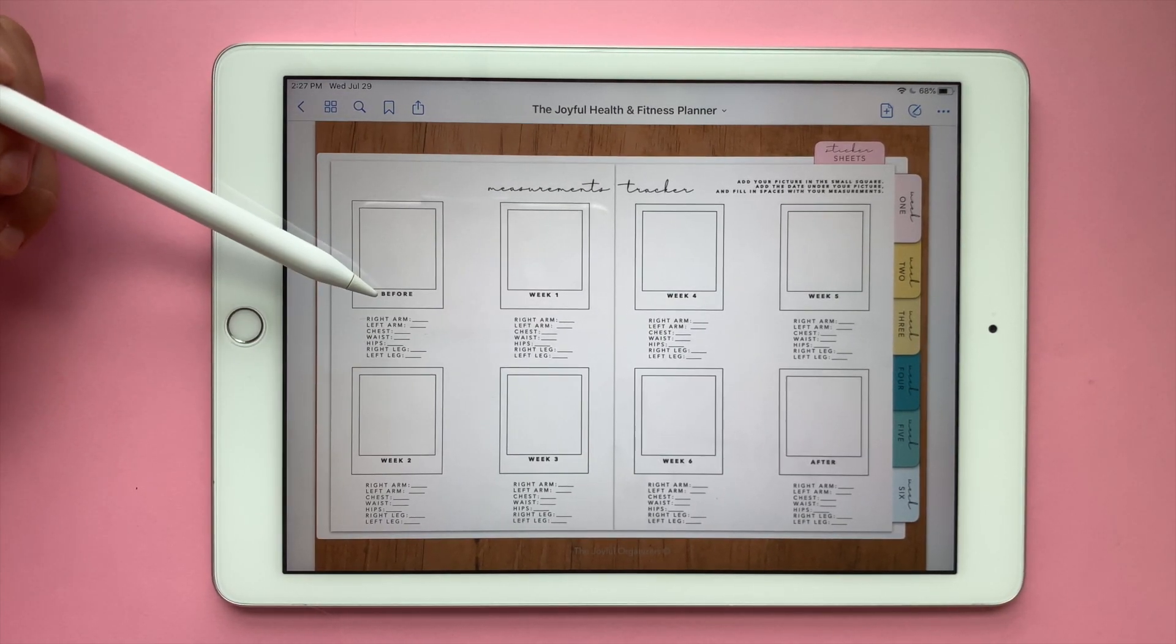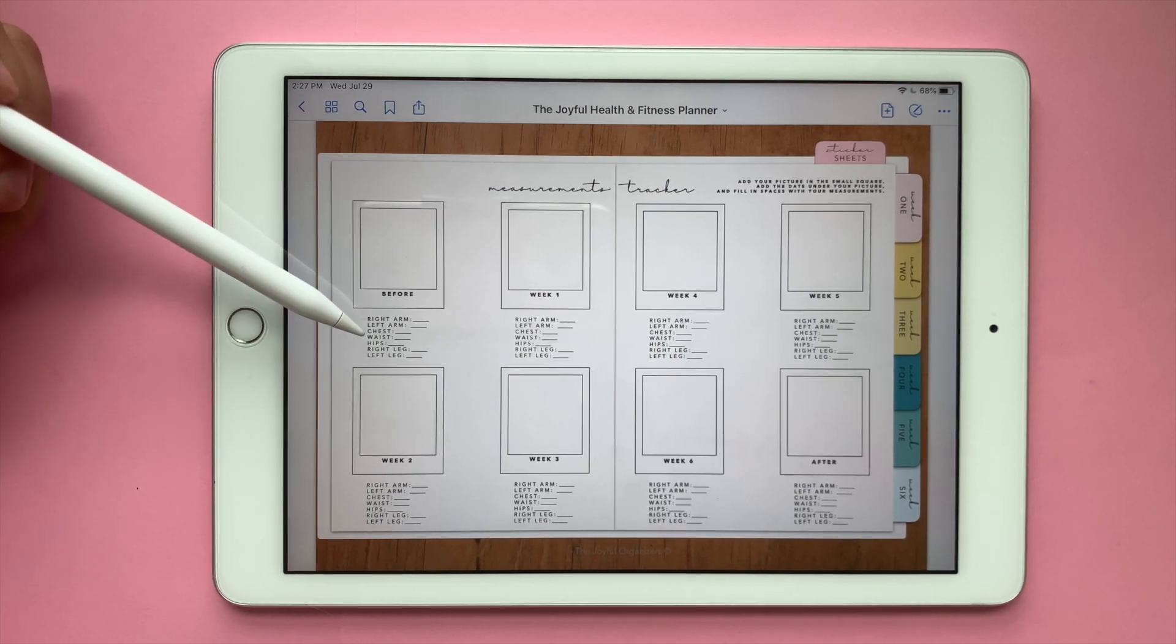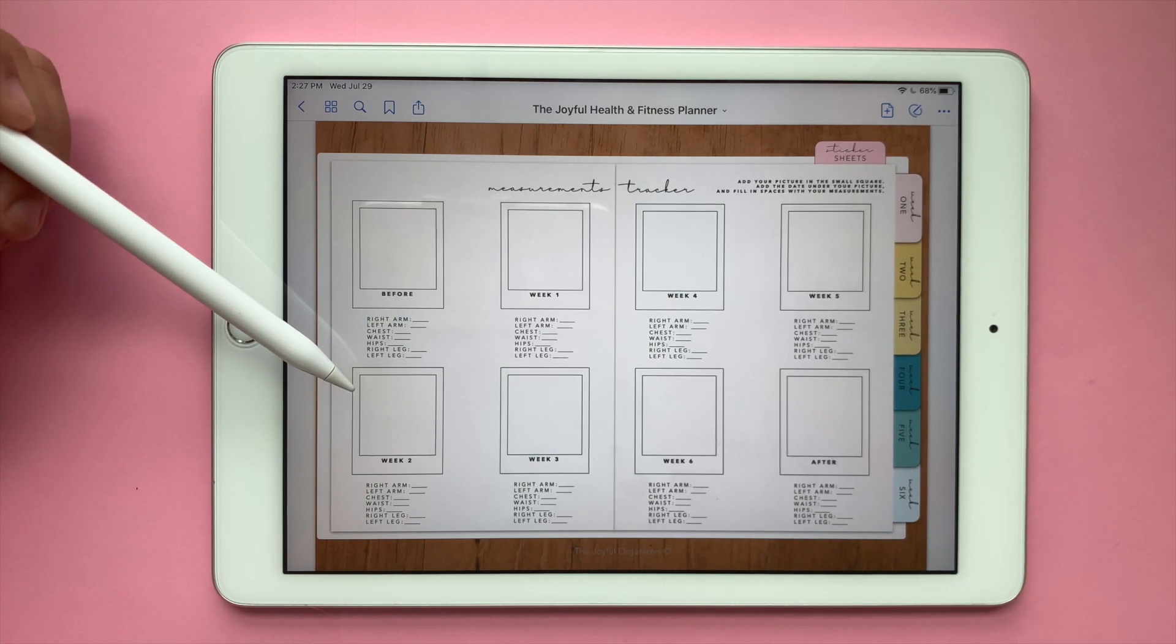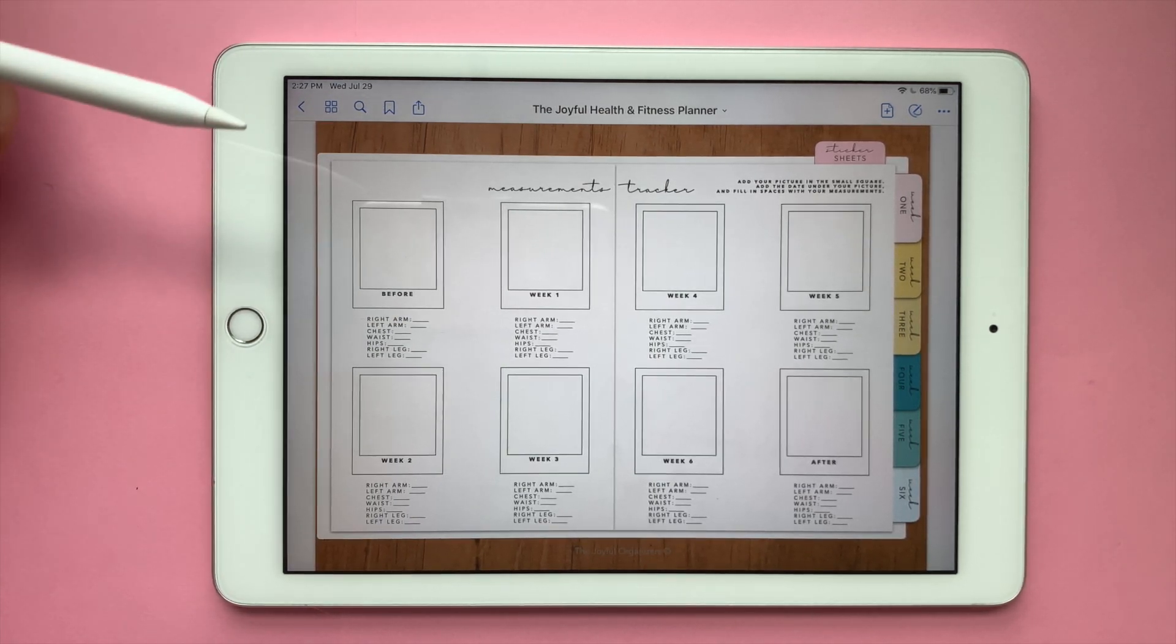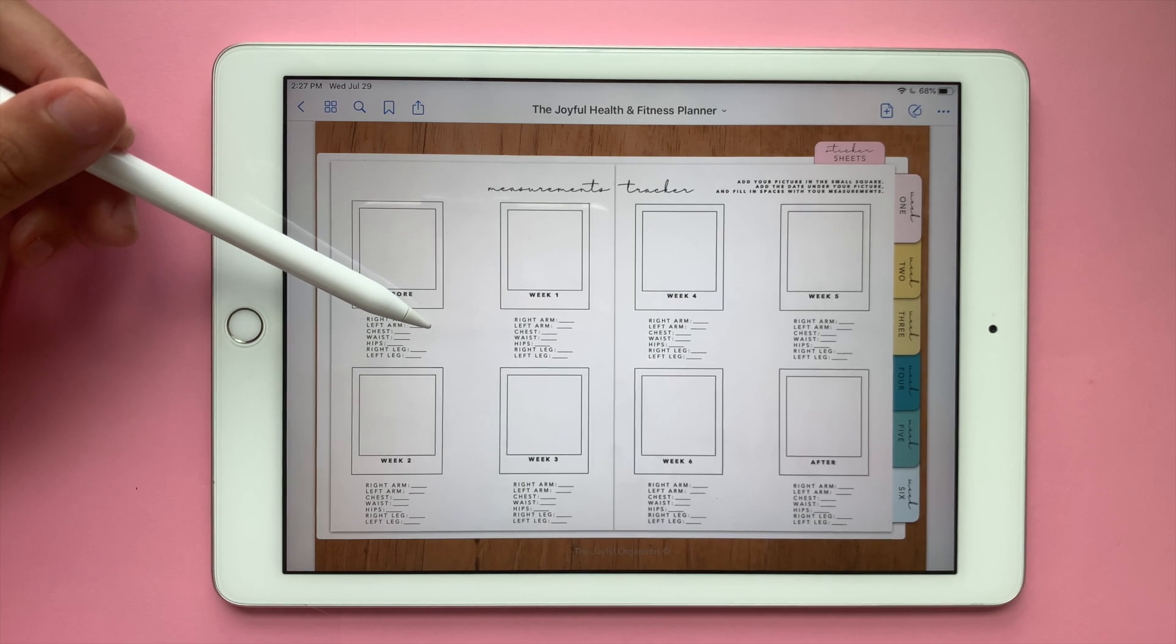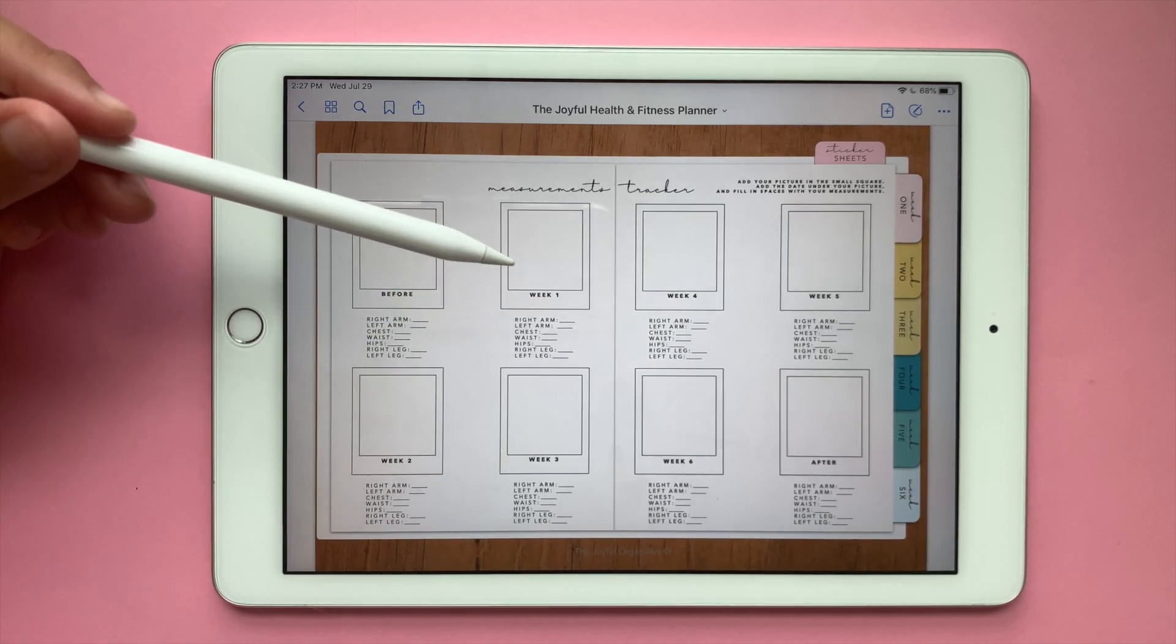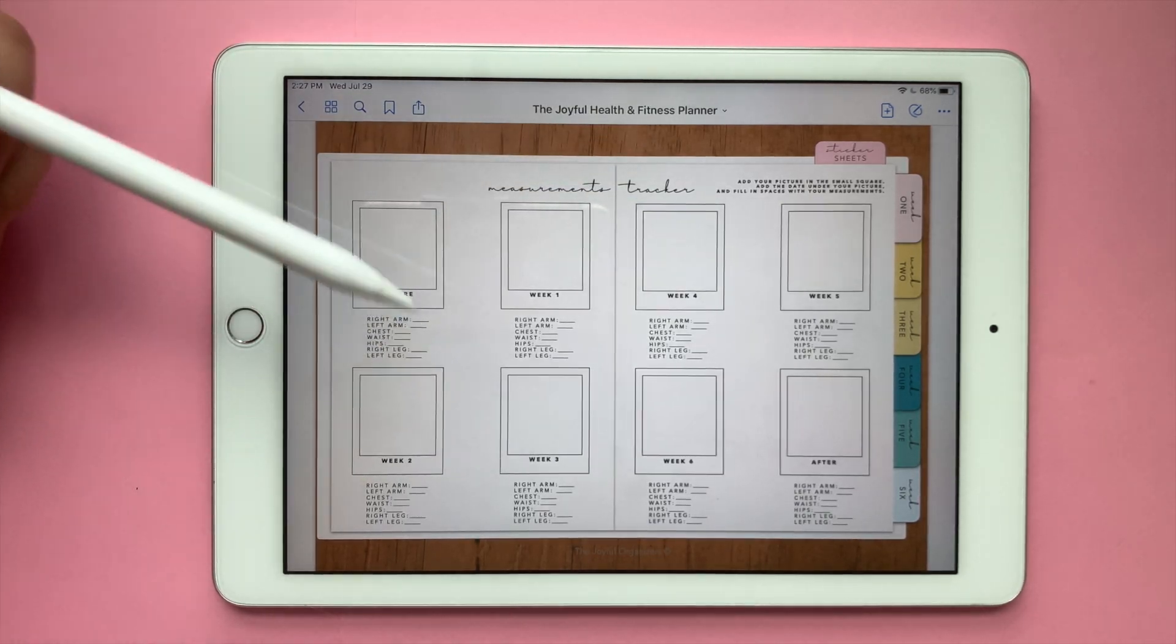On the bottom of each picture frame, you're going to see measurements and a little line for you to add your own measurements. I also recommend either putting centimeters or inches depending on how you're measuring so that each week you could be measuring consistently.